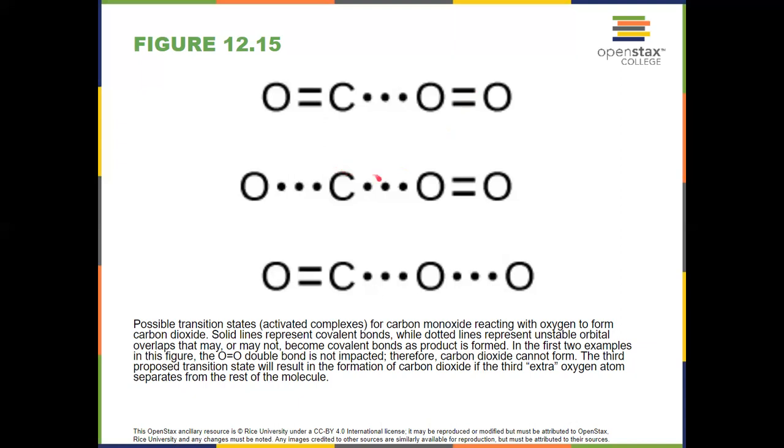Number two here is showing a carbon-oxygen bond forming. And now I'm breaking the wrong bond. That's not going to get me CO2, even though it had the right orientation. So only this last transition state works, where I'm forming the carbon-oxygen bond and breaking the oxygen-oxygen bond. So again, we need a collision. We need to have the proper orientation and sufficient energy for these things to happen.